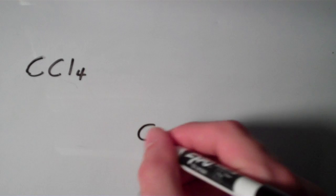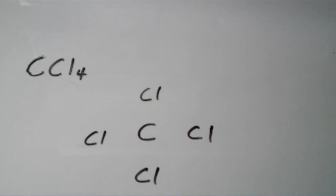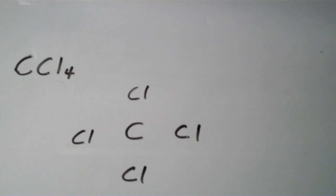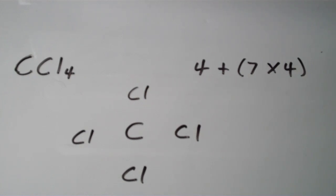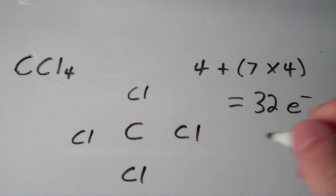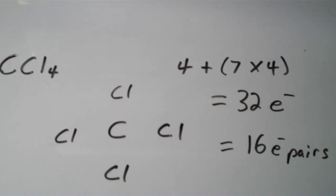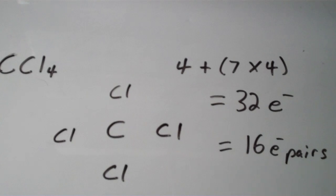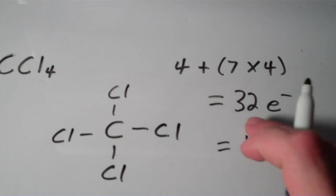Let's do CCl4. Carbon is less electronegative than chlorine, so carbon goes in the center and the four chlorines occupy the terminal positions. Carbon has four valence electrons and chlorine has seven valence electrons with four of them, so seven times four. Four plus the quantity of seven times four equals 32 valence electrons. Dividing 32 by two gives 16 electron pairs. Placing two electrons between every two atoms uses up four of our 16 electron pairs, so now we're down to 12.